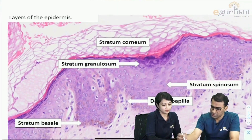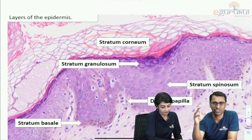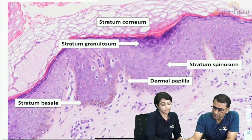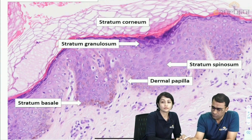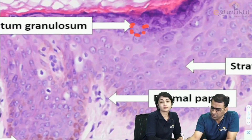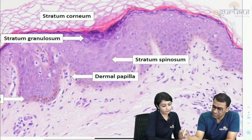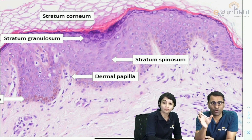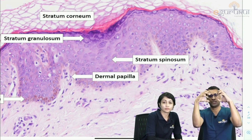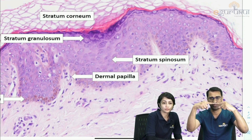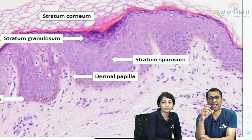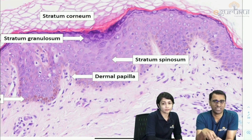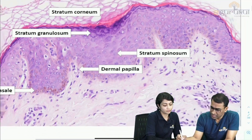Looking at the epidermal layers from top to bottom: the stratum corneum is the topmost layer with keratinization. Below it is the stratum granulosum — named for its visible granules. Then comes the stratum spinosum; the term 'spinosum' derives from 'spinous process,' where the spinous processes are actually the cell junctions (cadherins/desmosomes) that hold two cells together.